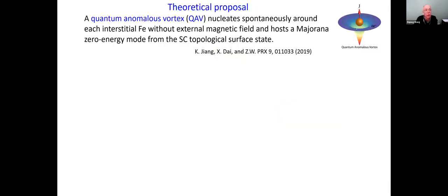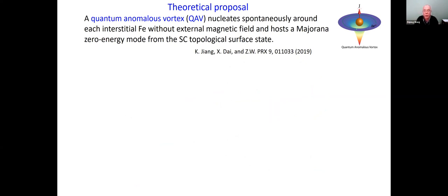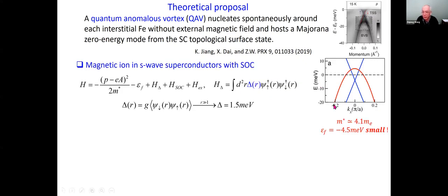Our proposal is that there is a quantum anomalous vortex — a vortex in zero magnetic field that nucleates spontaneously around the interstitial magnetic ion without external magnetic field — and that hosts Majorana zero modes from the superconducting topological surface state. We need to do a calculation to show that indeed it is energetically better to have a vortex instead of a vortex-free Yu-Shiba state.